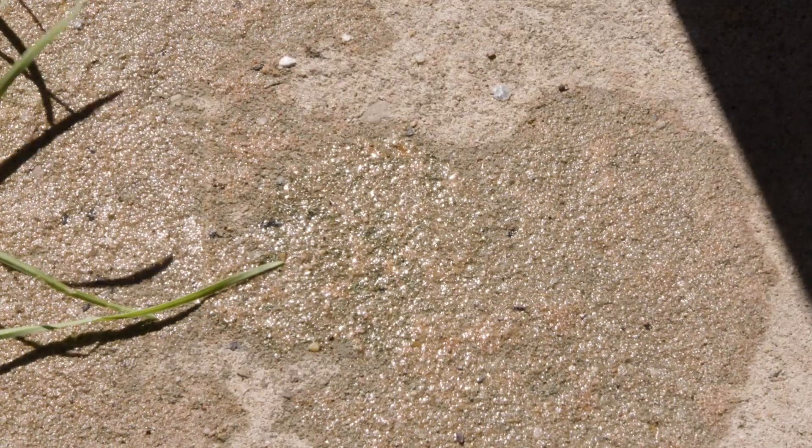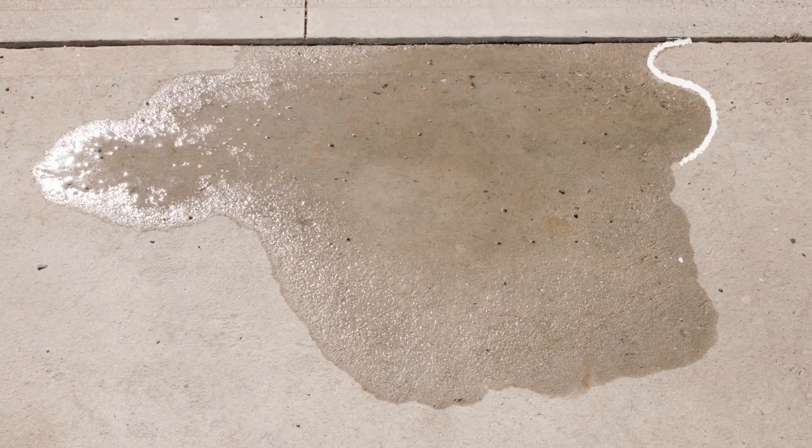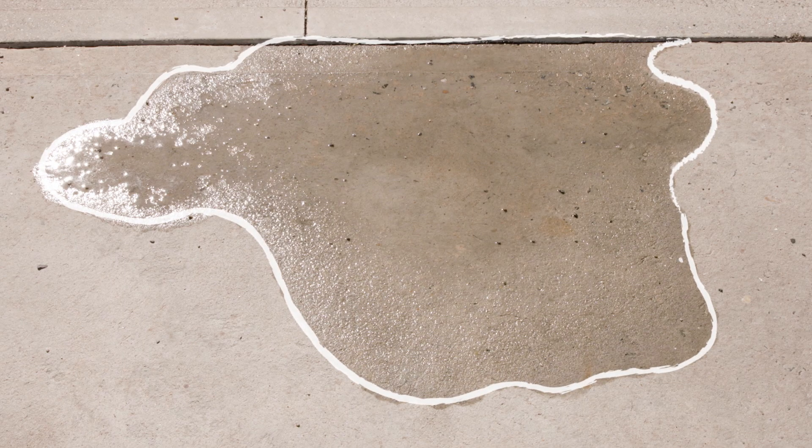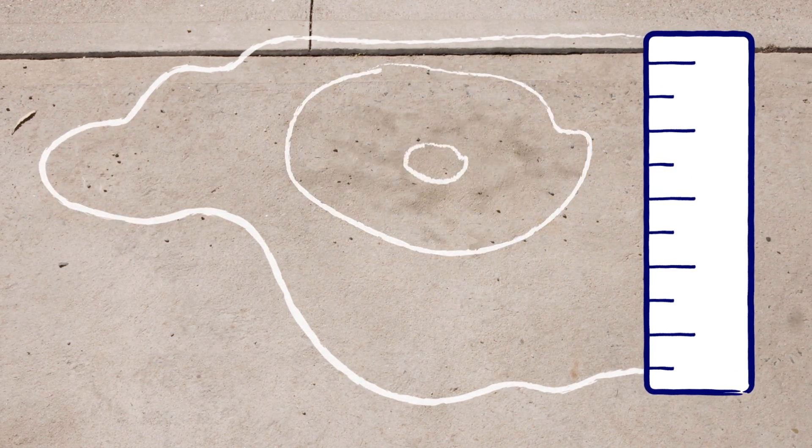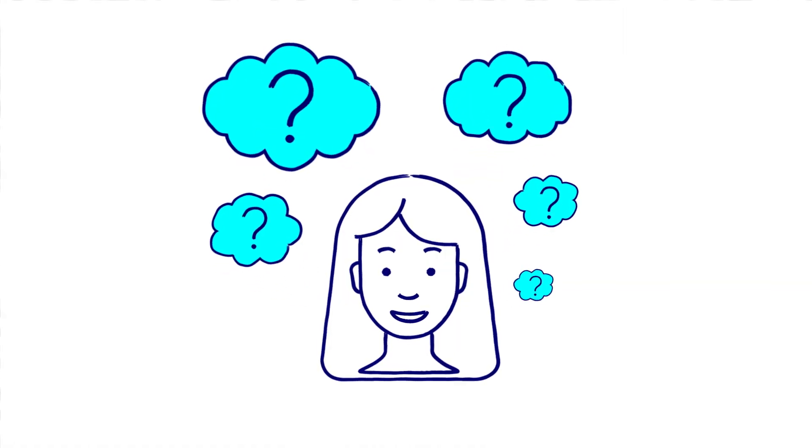Another way to explore evaporation is after it rains, draw a chalk line around a puddle in the sun and a puddle in the shade. Observe, measure and compare the rate of evaporation. Did one evaporate quicker than the other?